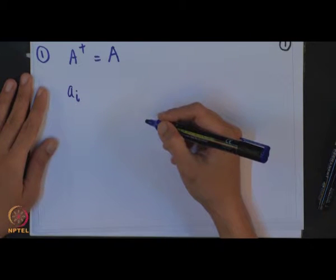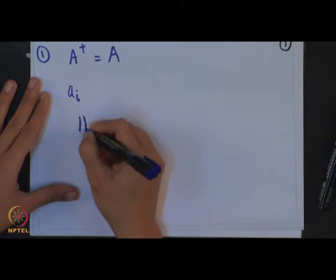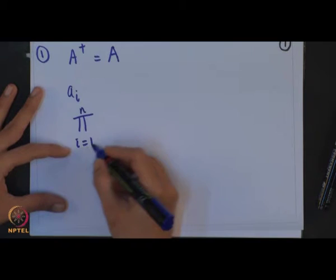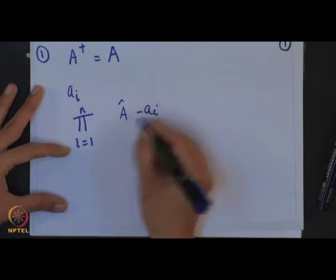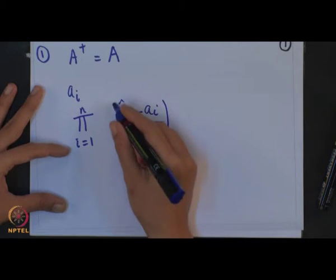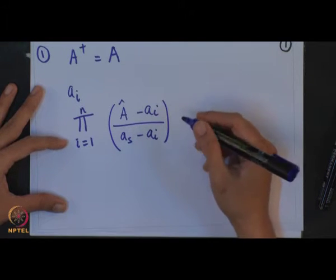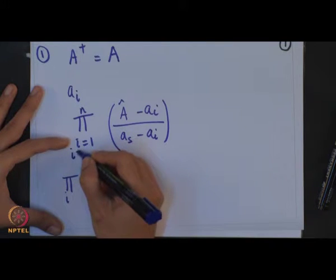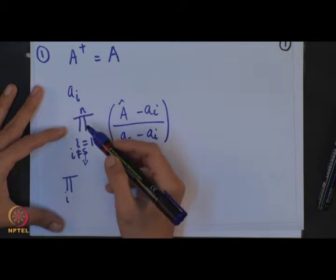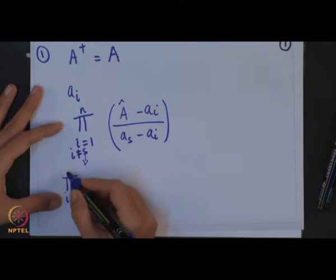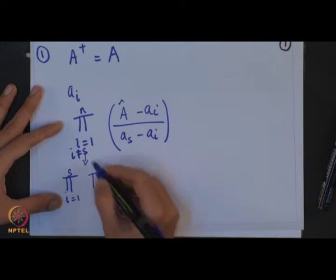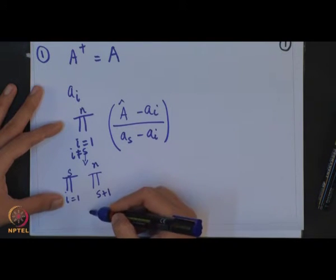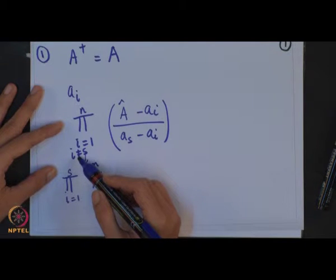The Hermitian operator has eigenvalue ai, so ai is the eigenvalue of this operator. You have to find the significance of the given operator: the product over i from 1 to n of (A - ai)/(as - ai), where i is not equal to s — meaning i runs from 1 to n excluding the value s.